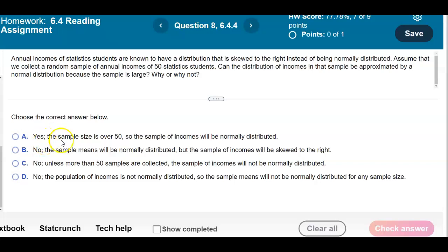The first part says yes, the sample size is over 50, so the sample of incomes will be normally distributed. No, the sample means will be normally distributed, but the sample of incomes will be skewed to the right.